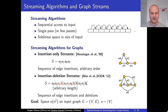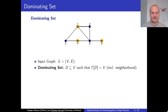The goal in both settings is to have an algorithm that uses space little-o of n², which is a priori non-trivial for very dense graphs, since we have at most n² edges. Now, what is a dominating set? Given some input graph G, a dominating set is a subset of vertices such that every other vertex is adjacent to one of the vertices in the dominating set — or equivalently, the inclusive neighborhood of the dominating set is the entire vertex set.